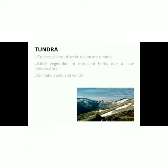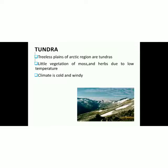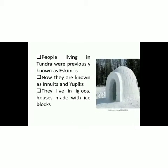Tundra consists of tree-less plains of the Arctic region. There is little vegetation of moss and herbs due to low temperature, because plants need sunlight and a certain temperature to grow, which is absent in these cold areas. The climate is really cold and windy. People living in tundra were previously known as Eskimos and now as Inuits and Yupiks. They live in igloos — houses made with blocks of ice.